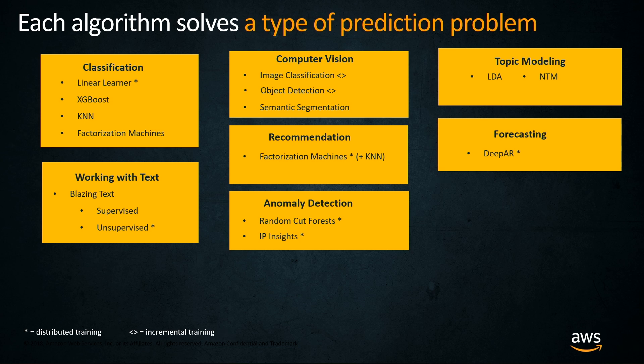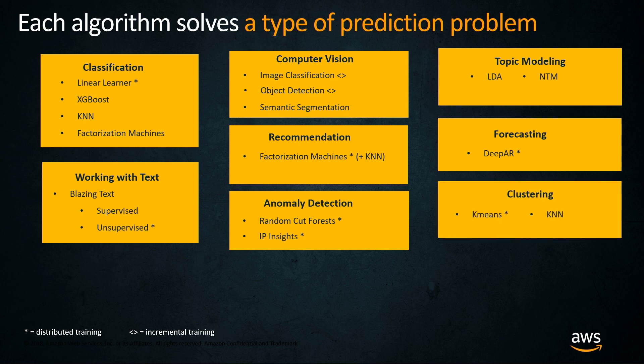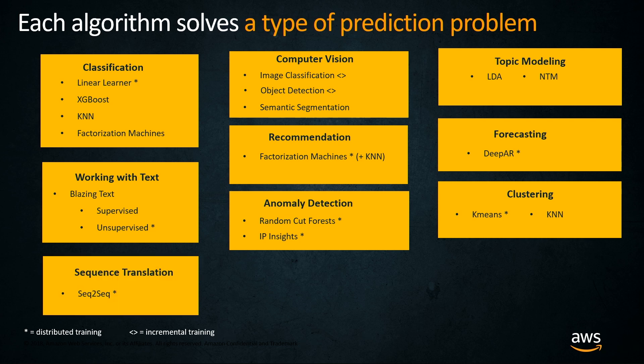IP Insights is designed for handling IP data. Clustering: both k-means and k-nearest neighbors can operate clusters with SageMaker's built-in algorithms. Sequence translation lets you take in various sequences and translate them — the best scenario is building your own language translator. If you're going from English to German, you line up sentence pairs in each language, and then the neural model learns the differences between the two and how one maps to the other.